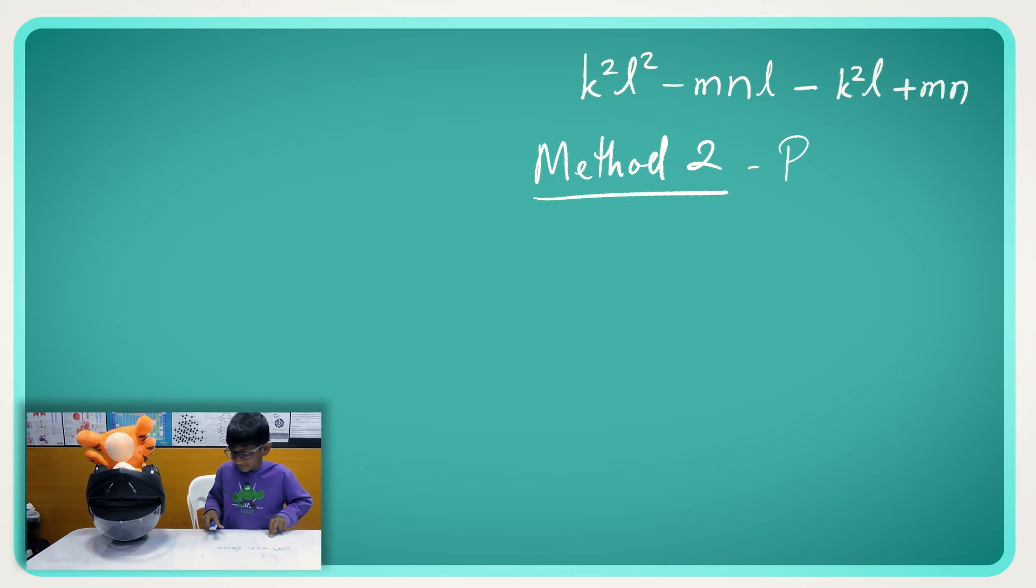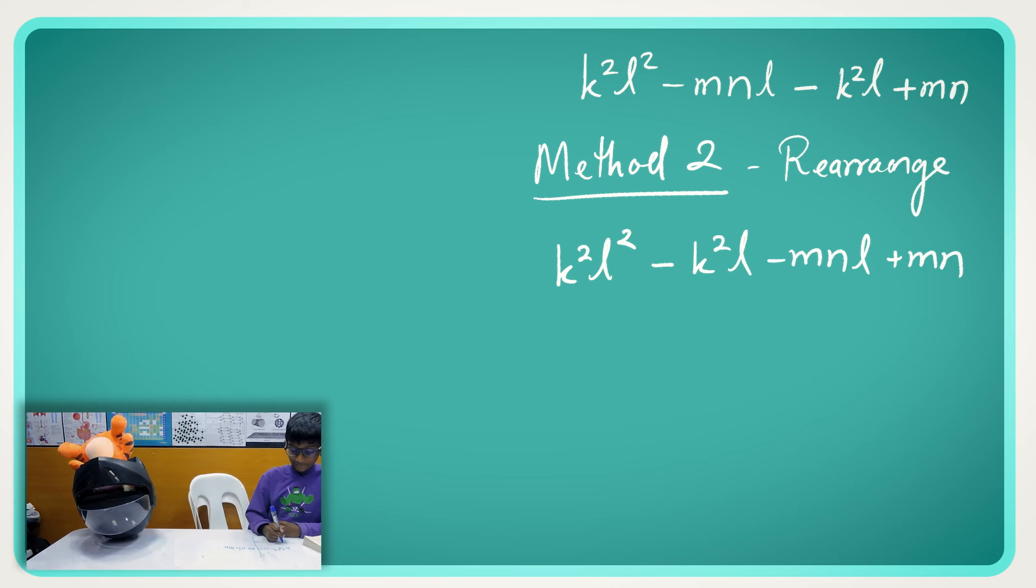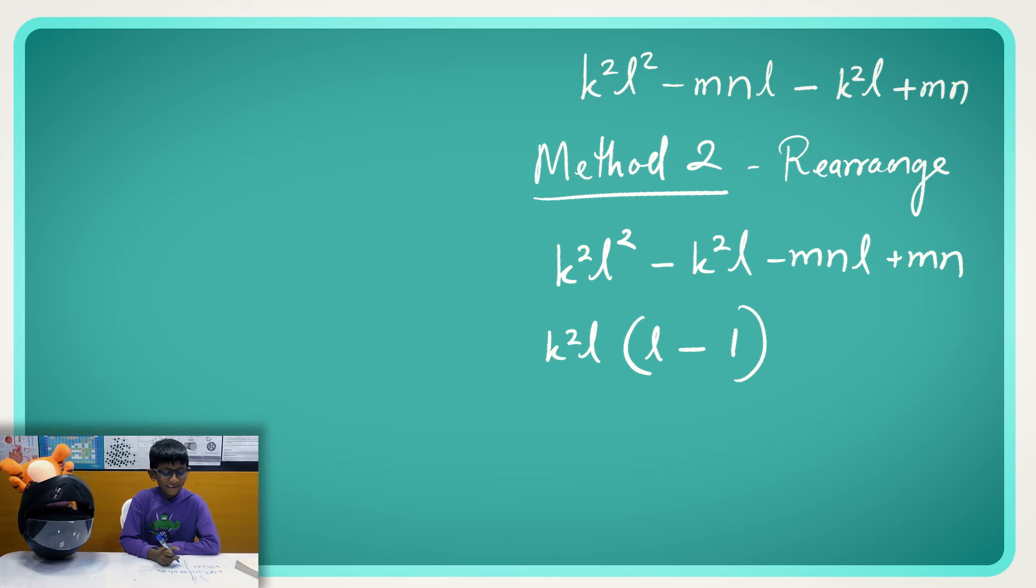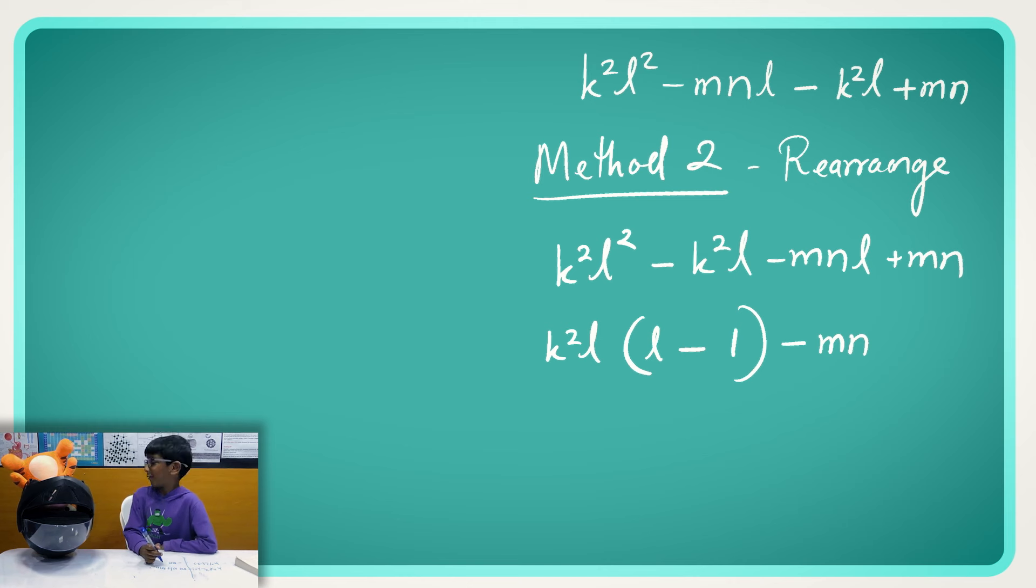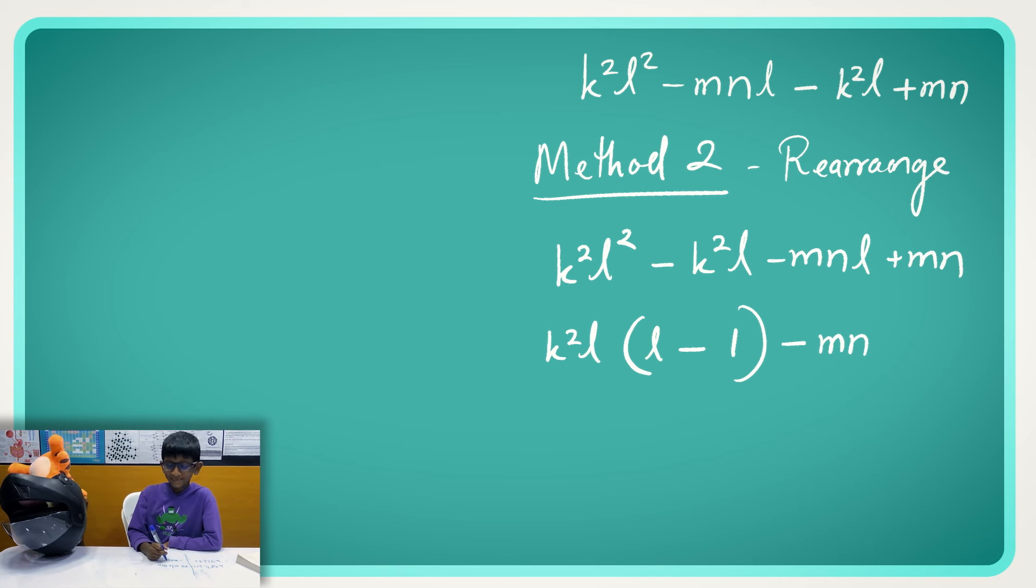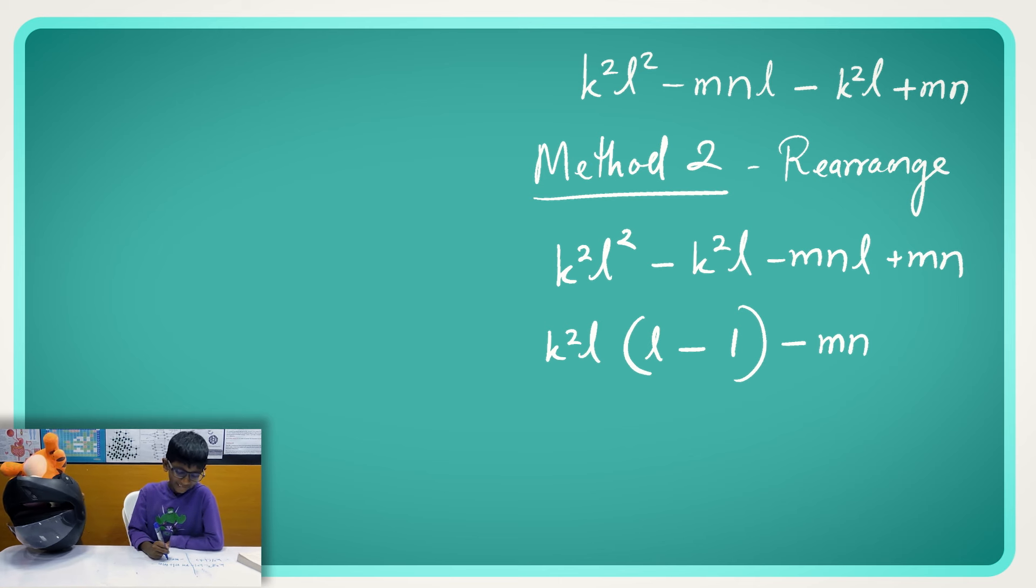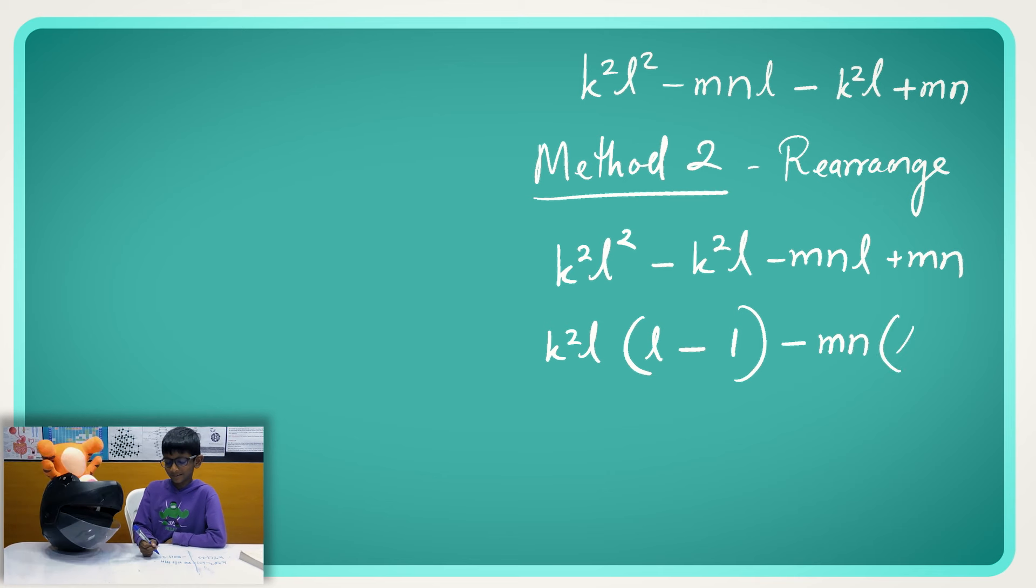Now we are going to use the negative two. So now we are going to rearrange these two. We are going to swap the middle two, and then for the outside, we are going to take the K square L, bracket it, N minus one. And then for the next one, we are taking the negative MN out. No single alphabet. Okay. And then we are going to take the L and then minus one inside.